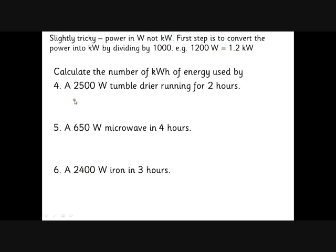They might be a little bit tricksy with you. They might give you power in watts instead of kilowatts, so you have to convert. There's 1000 watts in a kilowatt, so divide by 1000. 2200 watts is 2.2 kW. So 2500 watts becomes 2.5 kW for 2 hours is 5 kWh. 650 watts, that's less than 1000 so it's 0.65 kW × 4 hours = 2.6 kWh. 2400 watts is 2.4 kW, so 7.2 kWh.